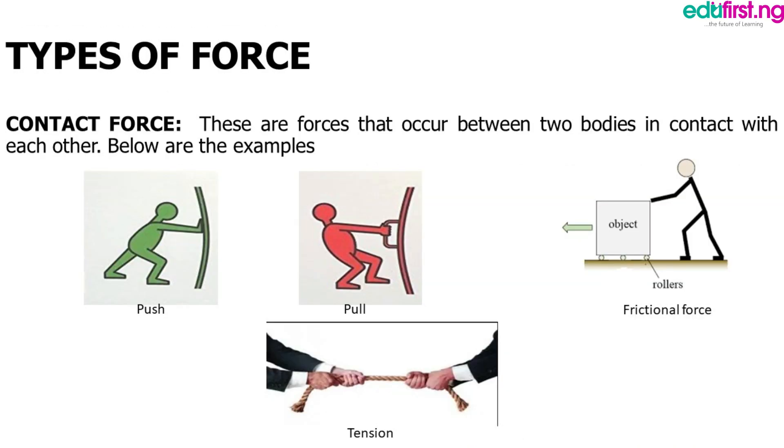Types of force. One, contact force. These are forces that occur between two bodies in contact with each other. Below are examples: we have push, we have pull force, we have frictional force, and we have tension.